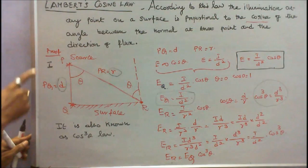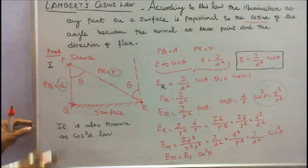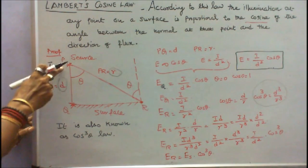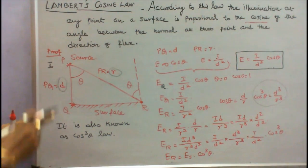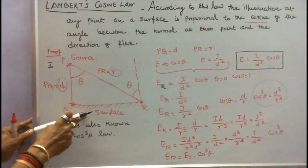Let me see the proof. This is PQR, a simple triangle. Here P is a source, its luminous intensity is equal to I. This is the surface.